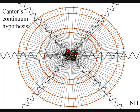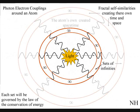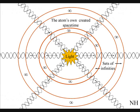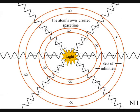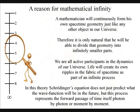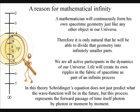Because of this, we have a continuous expansion at the quantum level that forms the continuum of time and the geometry of space-time that can always be divided into sets of infinities. A mathematician will continuously form his own space-time geometry, just like any other object in our universe.